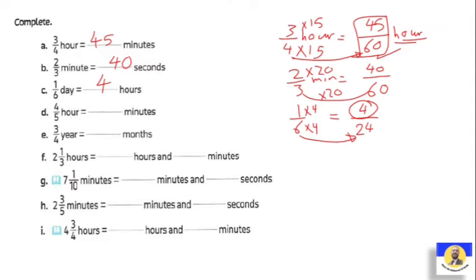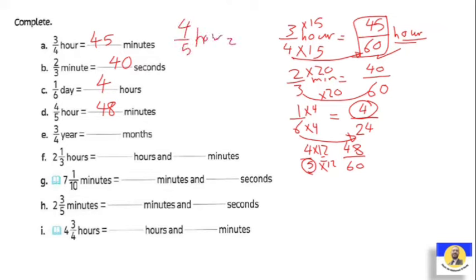Four fifths of an hour equals how many minutes? We want to change 5 to 60. 5 × 12 = 60, so multiply the numerator too: 4 × 12 = 48. So four fifths of an hour equals 48 minutes. There is also a second method: from greatest to smallest we multiply, so we can do 4 × 60 ÷ 5. You can do the multiply first or the divide first — whichever is easier. Both methods give the same answer.